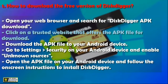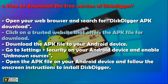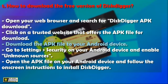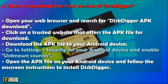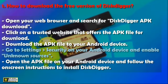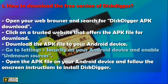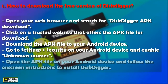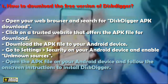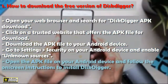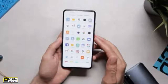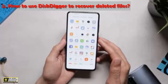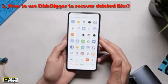Download the APK file to your Android device. Go to Settings, then Security on your Android device, and enable Unknown Sources. Open the APK file on your Android device and follow the on-screen instructions to install DiskDigger.